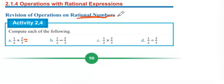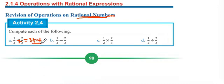Let's do one over two plus two over three. One times three is three, plus two times two is four, over two times three, which is six. Then three plus four is seven, so the answer is seven over six.